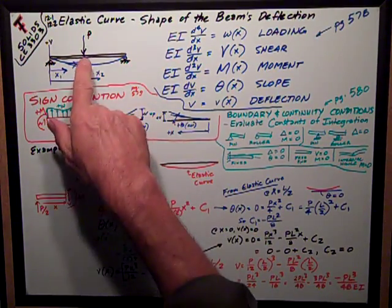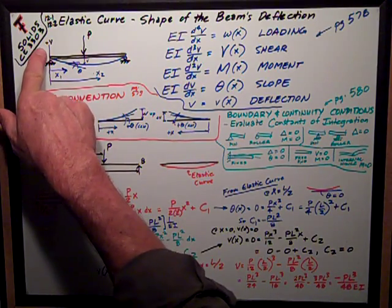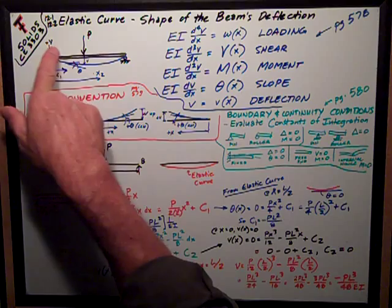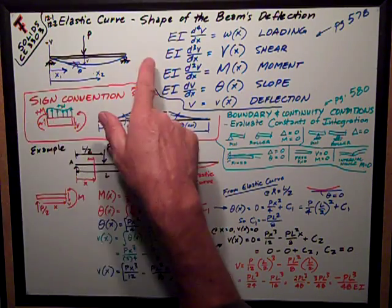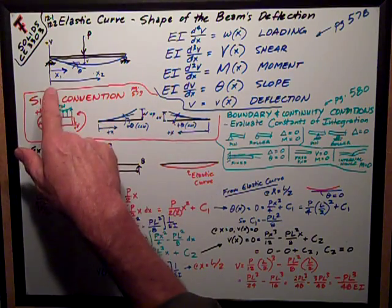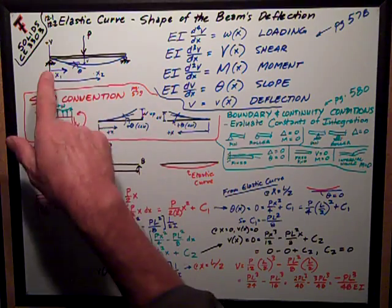Now, if I've got a beam, I've got to establish a couple more sign conventions or coordinates. I want to say that deflection is this letter V, measured positive up from the longitudinal axis. And then I'll talk about theta, which is the slope of the elastic curve.